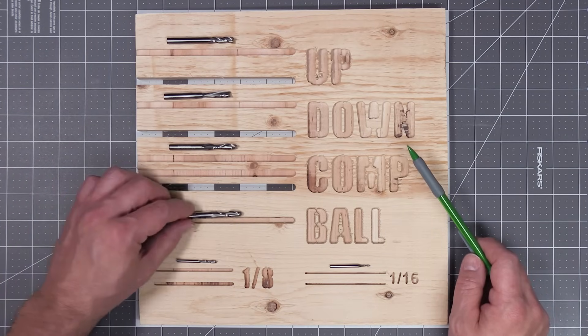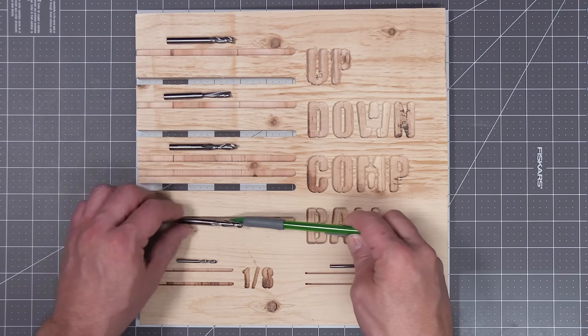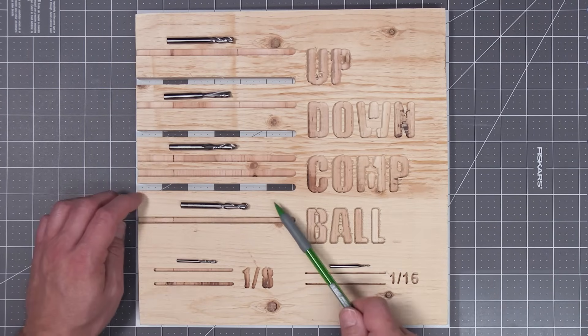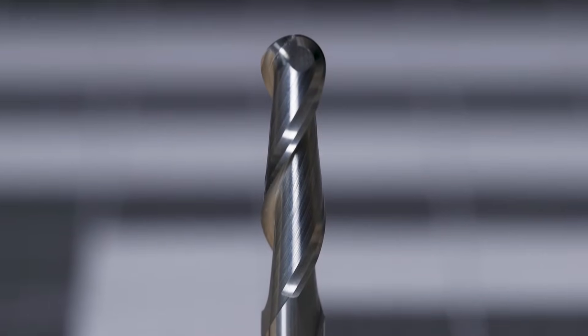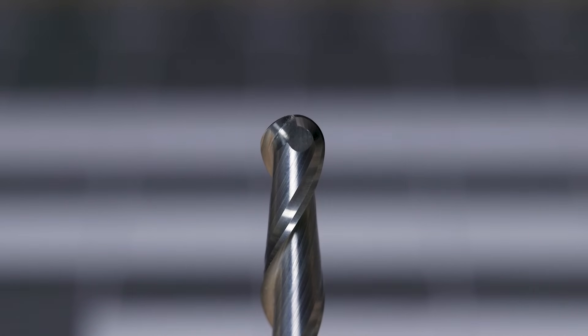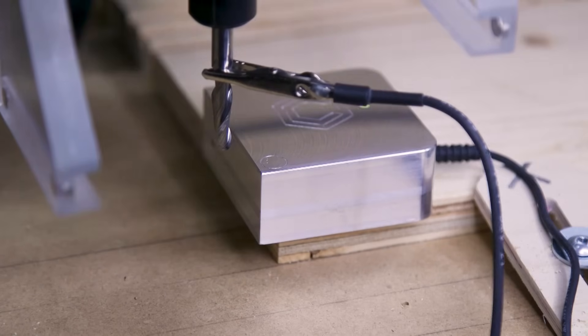The last quarter inch bit we're going to look at is a ball upcut bit. This bit is simply an upcut bit with a curved cutting surface as opposed to a flat one. This lets you cut round bowl type channels into your work surface instead of the square channels that you get from a regular end mill.